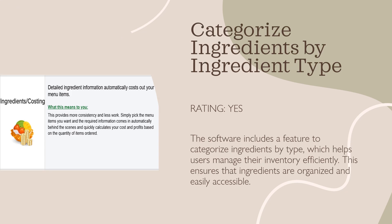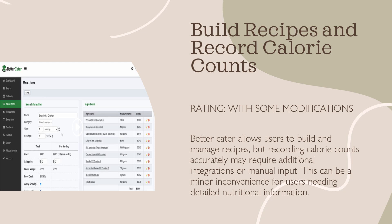This feature gives users the ability to categorize ingredients by type, allowing better organization of the inventory and a better flow in production with easy access to required ingredients. Users will also have the ability to build and manage different recipes; however, the record of calorie count is not a feature within the program, but users might be able to add them through manual input or external integrations.